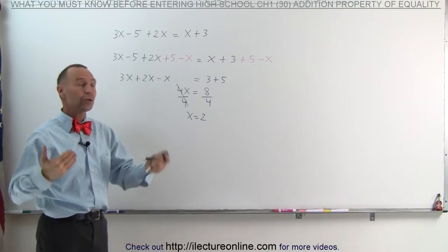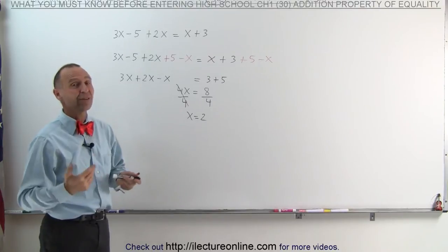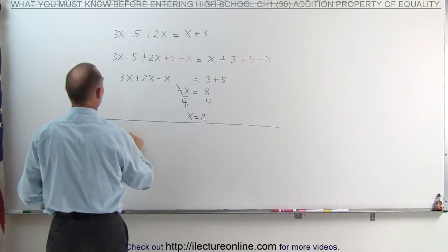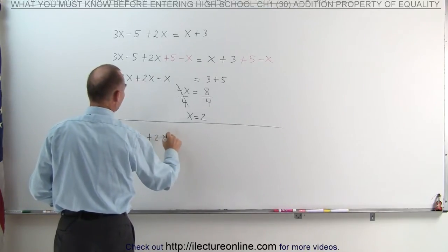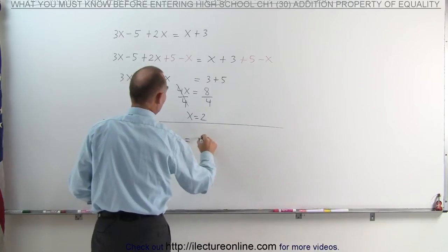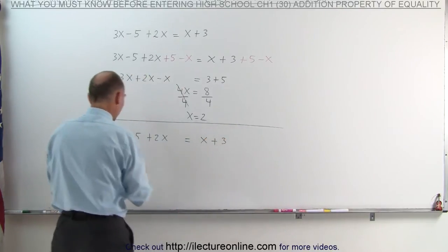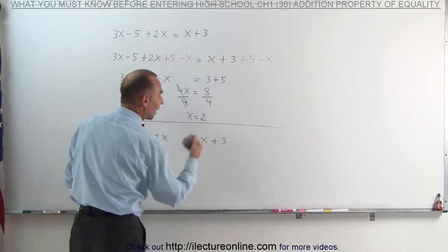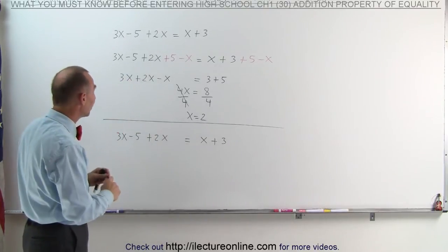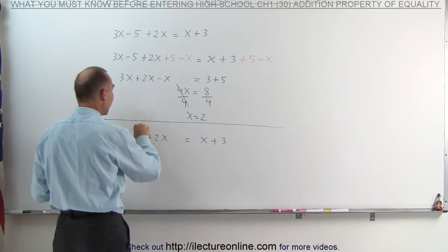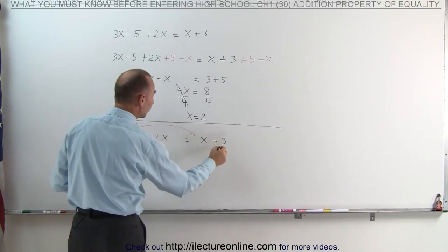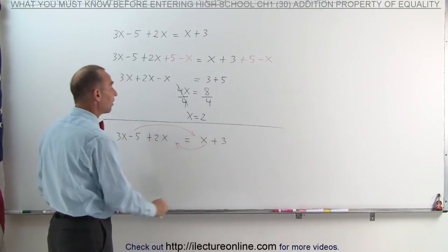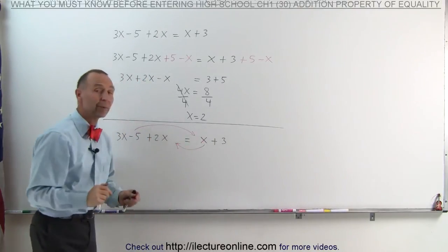Now it turns out there's actually an easier way to simplify things. Writing the equation again: 3x minus 5 plus 2x equals x plus 3. What I want to do is get the negative 5 gone and the x gone from the right side. In essence, I could simply move the negative 5 to the other side of the equation and move the x to this side. That's how I get rid of all the numbers on the left side and all the variable x terms on the right side.